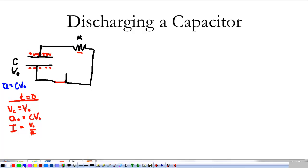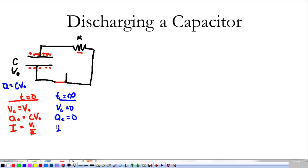A long time later — time equals infinity — all of those charges have trickled through the circuit. The voltage on the capacitor is now zero because the charge on the capacitor is now zero. They're all gone. Because there's no voltage and no more charge to move, the current is equal to zero.